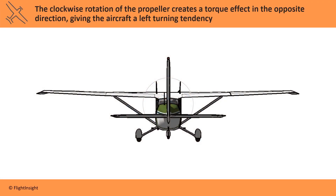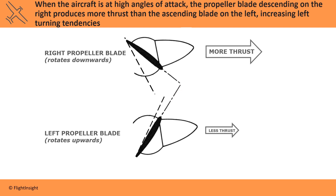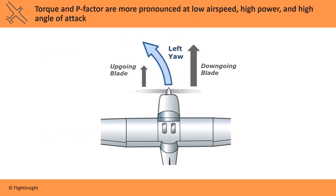In most single-engine aircraft you'll be flying, the propeller rotates clockwise from the pilot's point of view. This clockwise rotation creates a torque effect in the opposite direction, giving the aircraft a left-turning tendency. When the aircraft is at high angles of attack, the propeller blade descending on the right produces more thrust than the ascending blade on the left, causing a yaw tendency to the left.